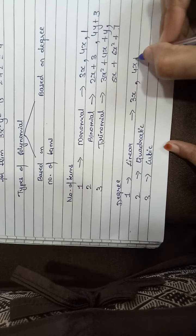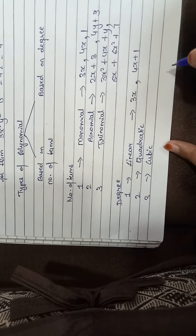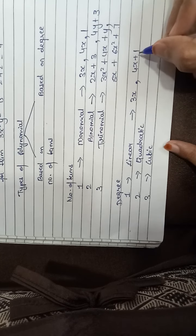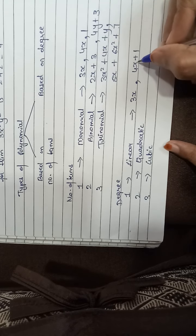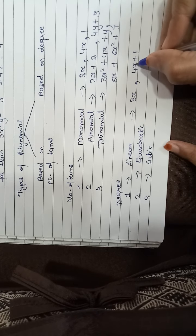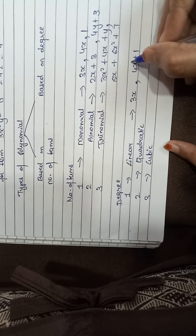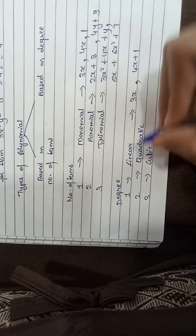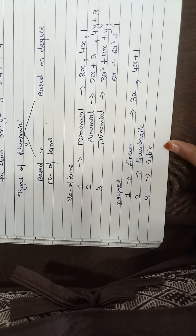Again, 4x plus 1 — there are 2 terms. You can have 2 terms or 3 terms, but make sure the degree of the variable should be 1. Here the degree of x is not given, so we assume it as 1. So it is a linear polynomial.